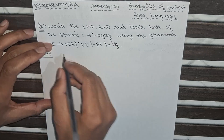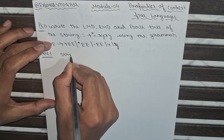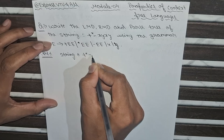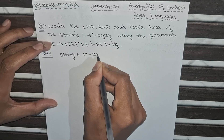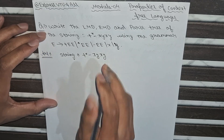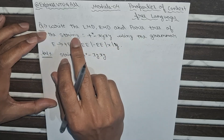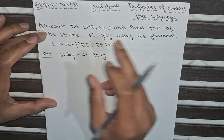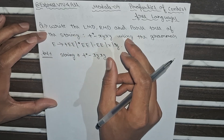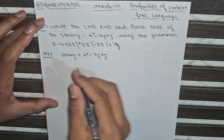So the string given is +*-xyxy. We have to find this string using the leftmost derivation, rightmost derivation, and we have to make the LMD and RMD parse trees.